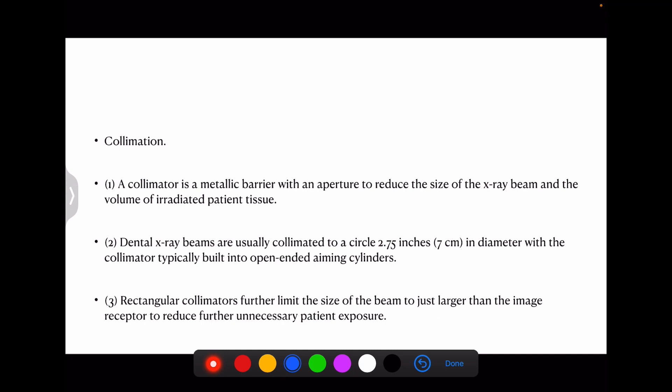Then coming to the collimator or collimation, again very important for dental board exams. I am putting a star over here, and also the rectangular collimators which will be further clearer in upcoming slides. Basically a collimator is a metallic barrier with an aperture which reduces the size of the x-ray beam and the volume of irradiated patient tissue. A metallic barrier is used - it can be rectangular form or circular form. Dental x-ray beams usually are collimated to a circle of 2.75 inches or roughly 7 centimeters in diameter. The rectangular collimators further limit the size of the beam to just larger than the image to reduce further unnecessary patient exposure. Whenever asked how to reduce patient exposure, the answer would be using a collimator and the rectangle shape is the most important one.